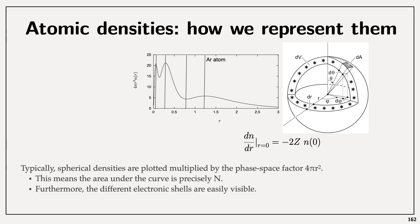If we recast this using those notations, we see that the derivative of the density is −2Z/a₀ × n(0) at r = 0. That is the Kato theorem at the origin. The electronic shells are visible in the plot, but do not be fooled: the density is not zero at the ions. It is just that 4πr²n(r) is zero at the origin.